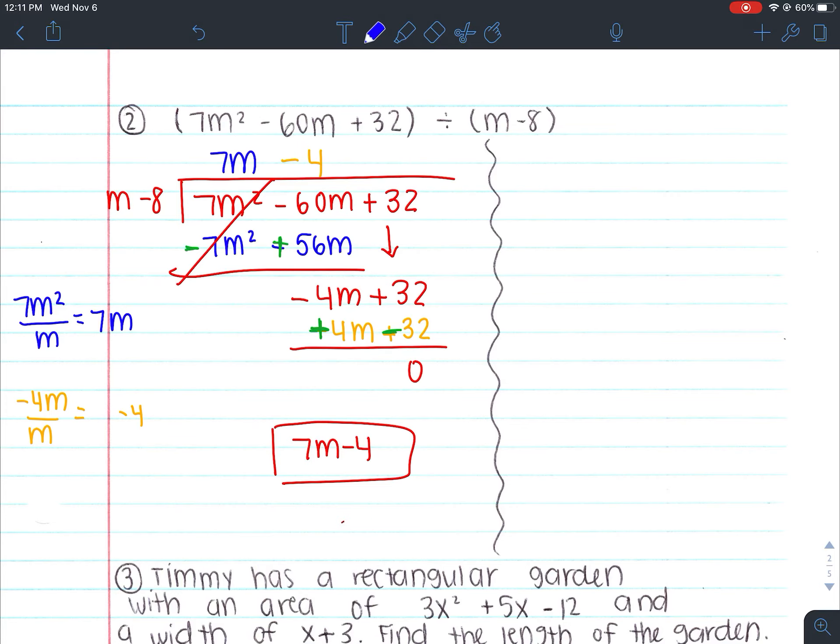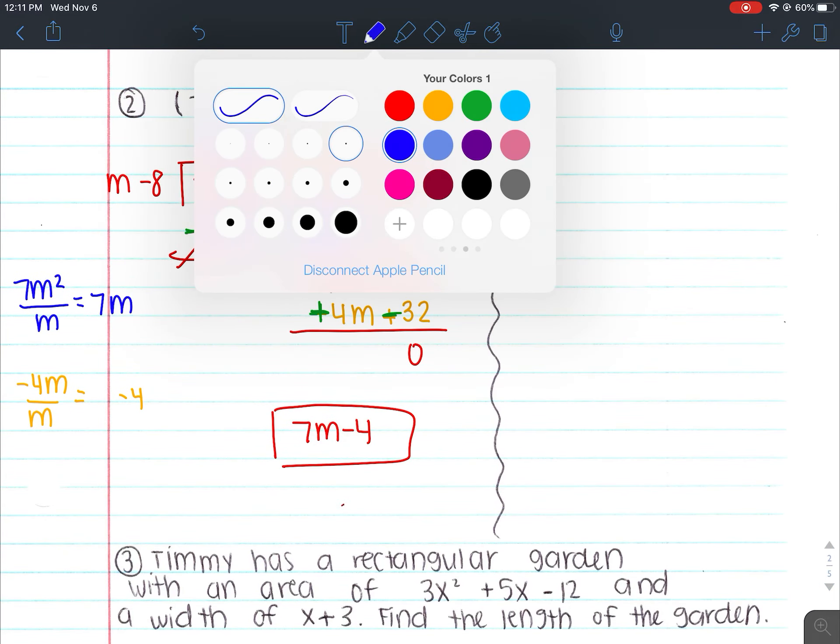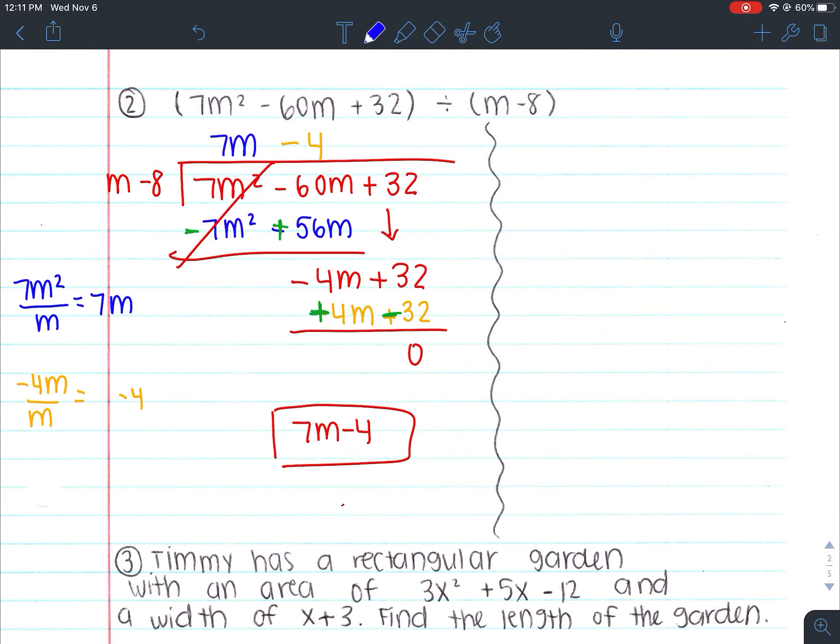All right, so number two, we did long division already. So let's go ahead and do the factor and reduce method. So I want to go ahead and set it up. So 7m² - 60m + 32 divided by m - 8.